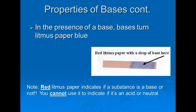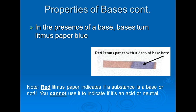In the presence of a base, litmus paper turns blue or stays blue. Red litmus paper indicates whether a substance is a base — you cannot use it to indicate if it's an acid or neutral. If red litmus paper turns blue, you have a base. If it stays red, it's either an acid or neutral.